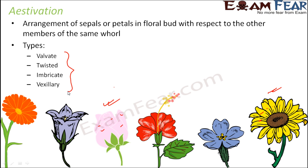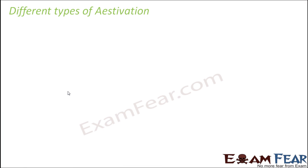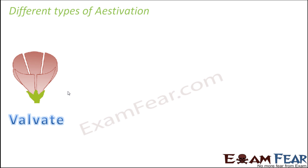Let's understand why different flowers look different by looking at these four types of aestivation. In valvate aestivation, the sepals or petals just touch each other at the margin — they do not overlap.